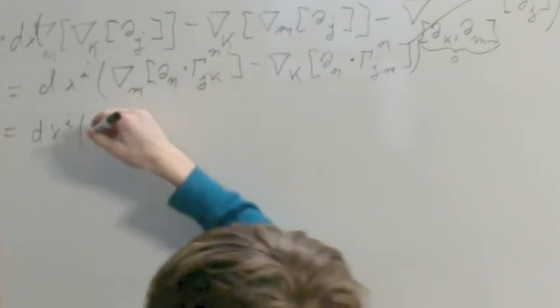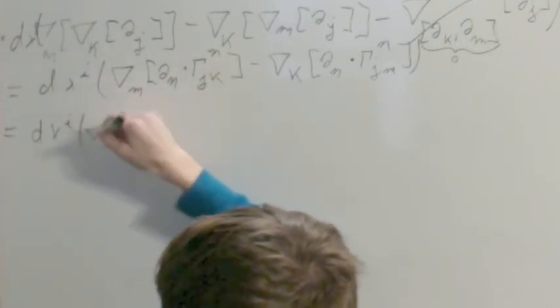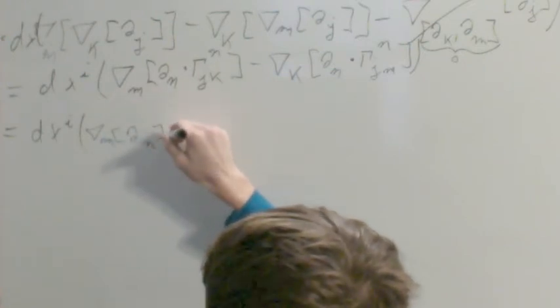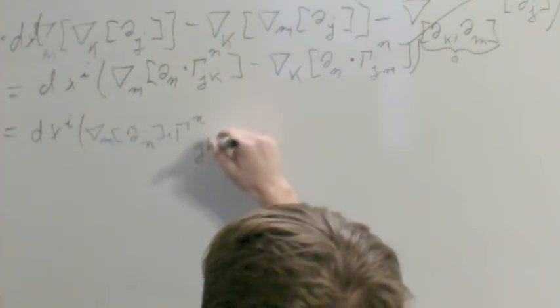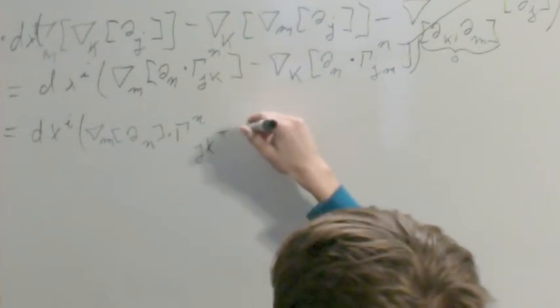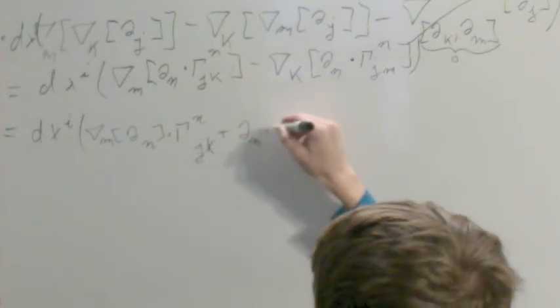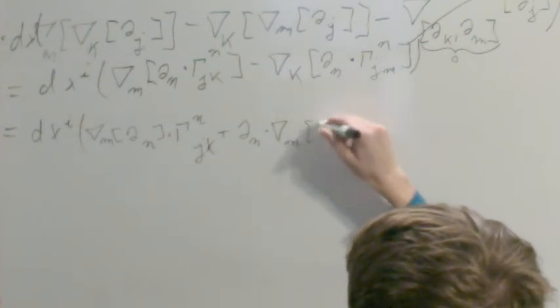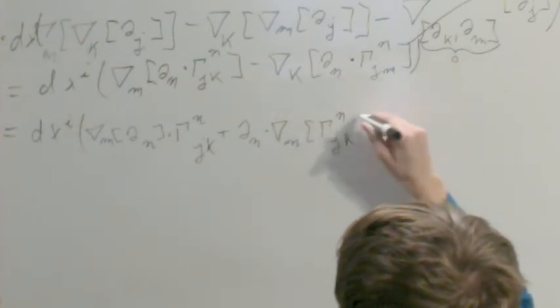And then that's going to be DX I applied onto, I'm going to go down. Okay, so it's going to be applied onto, right here we use the product rule. So this is going to be the covariant along M of del N times gamma N, J, K, plus del N times covariant along M of gamma N, J. This is the Leibniz rule.